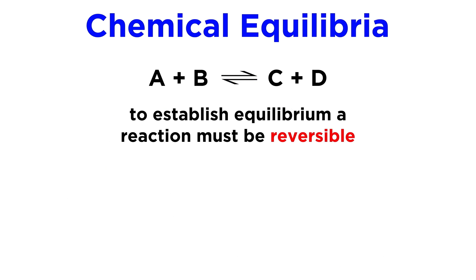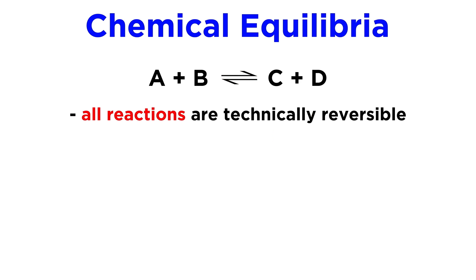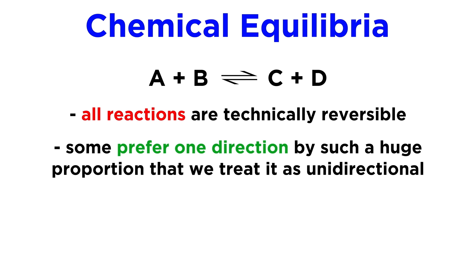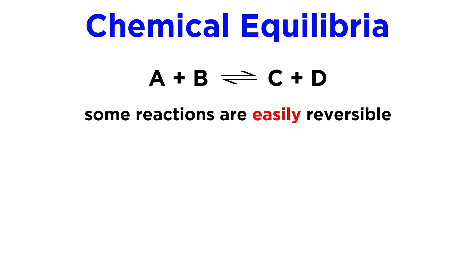In order for such an equilibrium to occur, the reaction must be reversible, and we will denote this with the equilibrium arrows, which illustrate motion in both directions. All reactions are technically reversible, but for some, one direction is preferred by such an astronomical amount that we regard it as essentially unidirectional. Some are easily reversible under certain conditions, so those are the ones that we will discuss in terms of an equilibrium.